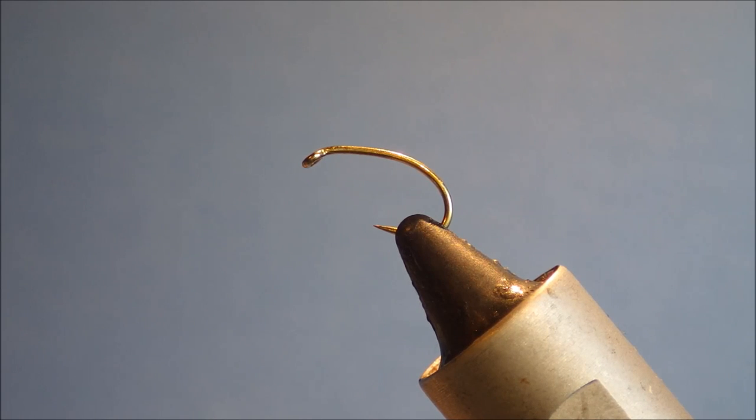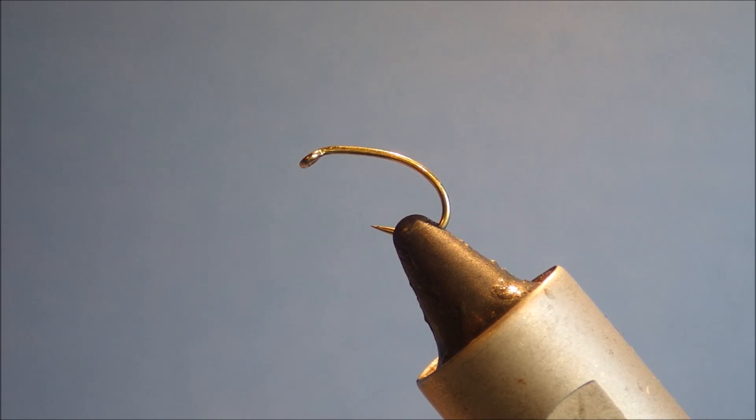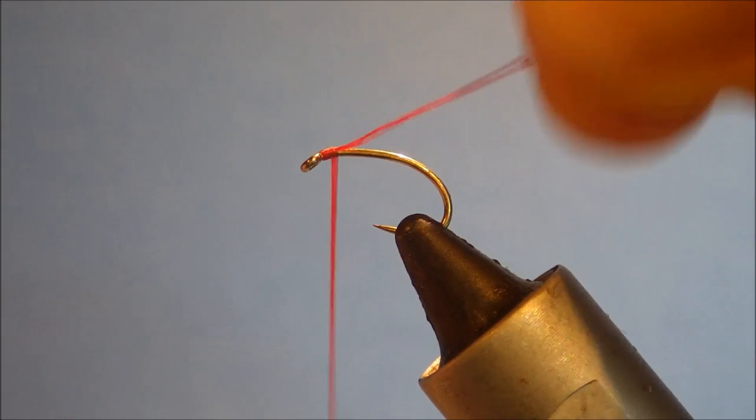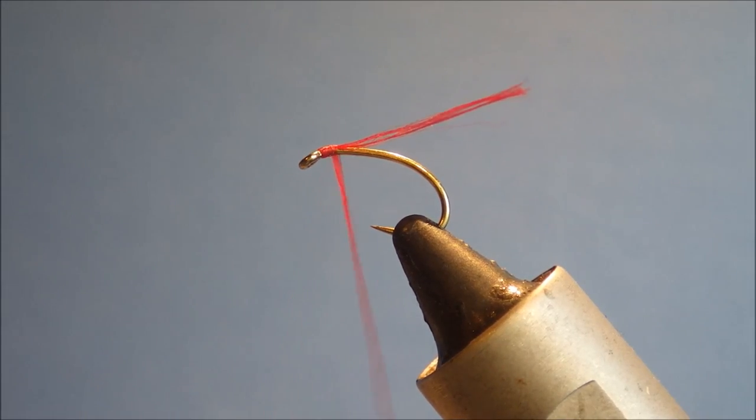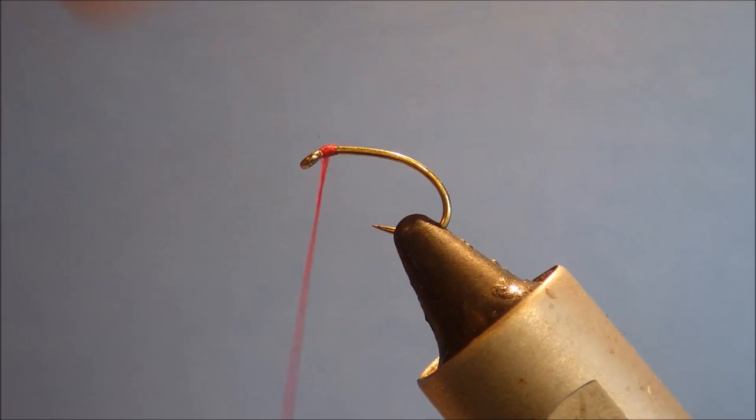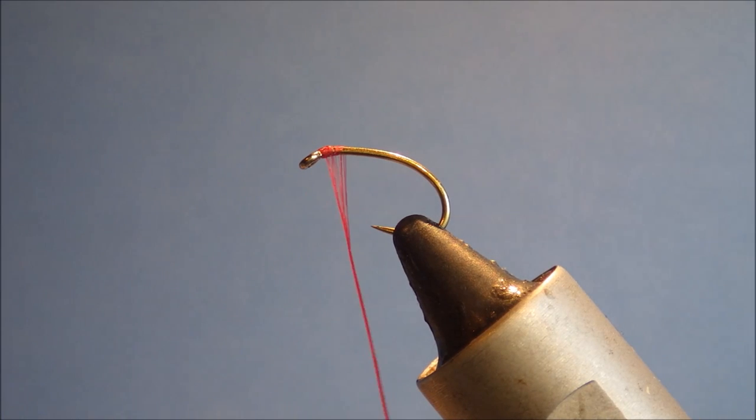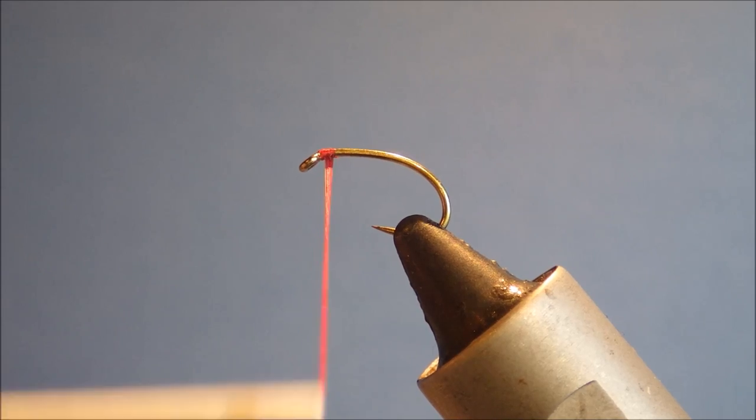On the vise I've got a heavy grub hook. In this case I'm using a TMC 2457, it's the Shrimp and Cactus Pupa Down Eye, wide gape, 2x heavy wire. But you can use something like a Kamasan B110, Fulling Mill Super Grub. There's a range—any heavy wire continuous bend hook is fine.